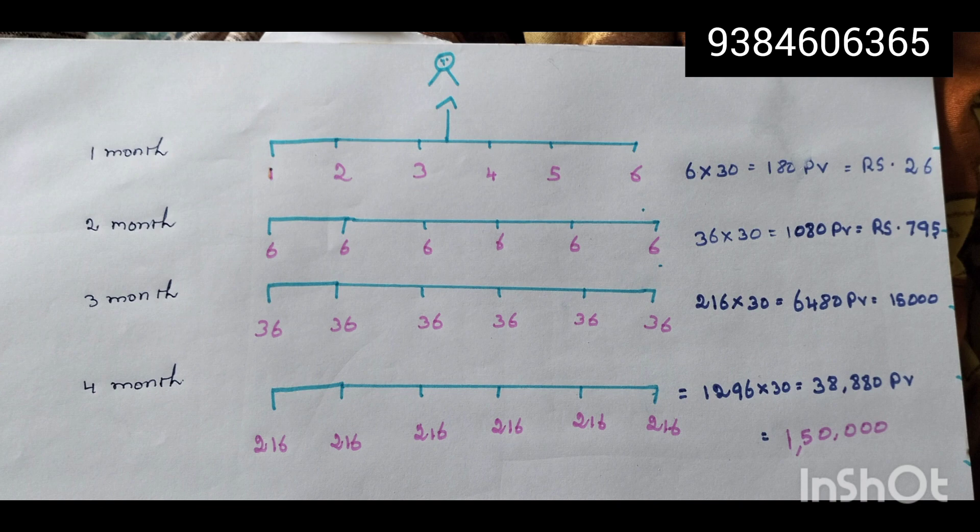We will add 6 names for the second week. We will pay our total PV. So total PV is 36. The income is 799.